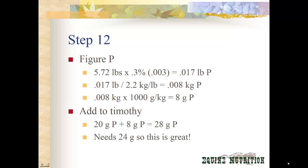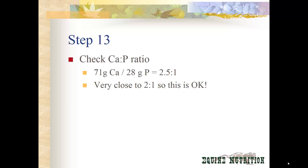For phosphorus: 5.72 pounds of hay times 0.3% equals 0.017 pounds of phosphorus; work through the math and you get 8 grams of phosphorus from the alfalfa. He was getting 20 grams from Timothy pellets, now getting 8 more from alfalfa — 28 grams total. He needed 24, so this is really really close, and that is great. Now we check our calcium to phosphorus ratio: 71 grams of calcium divided by 28 grams of phosphorus gives us 2.5 to 1, which is really close to the ideal 2 to 1 — so this is great.